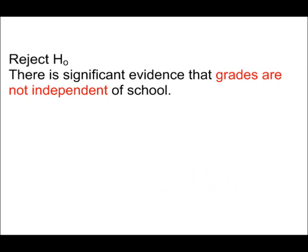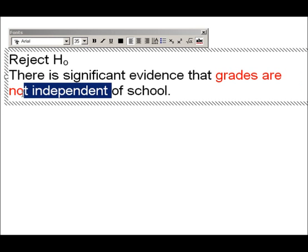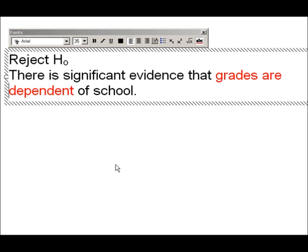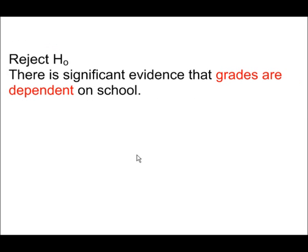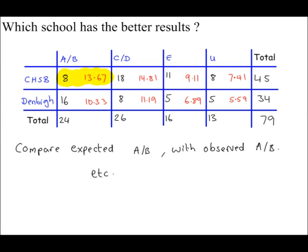So, here's the conclusion. To reject H0, there is significant evidence that grades are not independent of school. Another way of saying this that will probably make more sense to you, because you've got not independent. You could say that grades are dependent on the school. That makes more sense. But what you had there before wasn't wrong. That was correct as well. So, because the grades depend on the school, now we can have a look at the data further and work out which school is better.